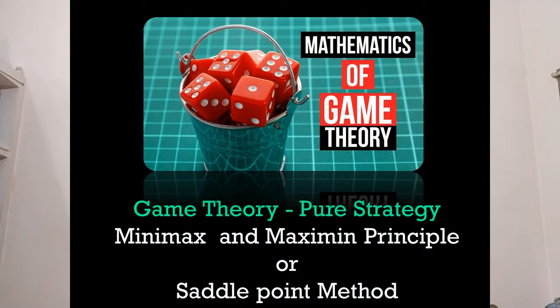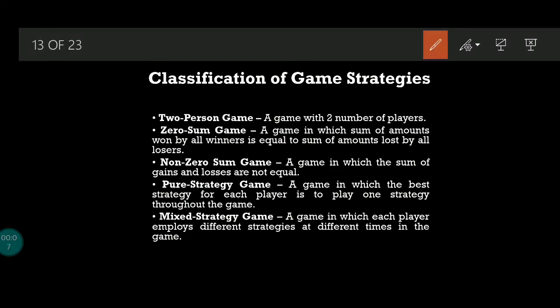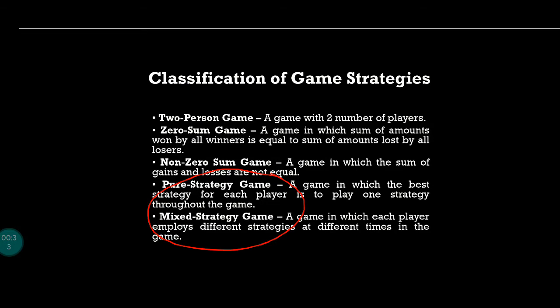We begin the session on pure strategy — the maximin and minimax principle, also called the saddle point principle. There are different types of game strategies: two-person game, zero-sum game, non zero-sum game, pure strategy, and mixed strategy. We will focus on pure and mixed strategy. A pure strategy game is one in which a player selects only one strategy throughout the game. A mixed strategy game is one in which a player selects more than one strategy.